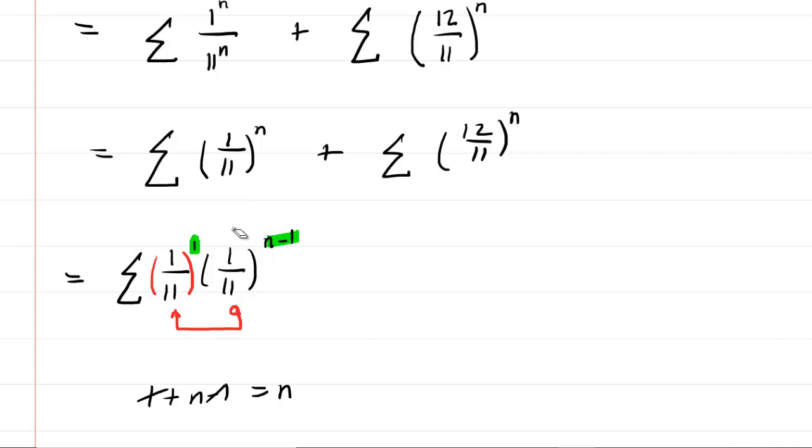So this is an equivalent way of writing out the series. We can actually do the same thing with the other one. You might want to pause the video and try it out. But basically, it becomes 12 over 11 multiplied by 12 over 11 to the n minus one.